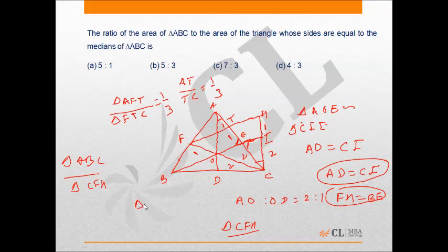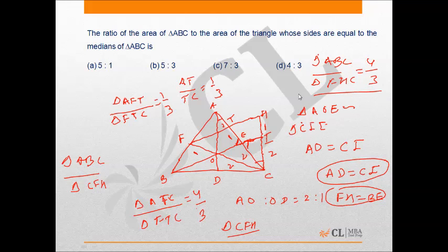Therefore, the ratio of area of triangle AFC to triangle FTC will be 4 is to 3. And this ratio will be exactly the same as the ratio of area of triangle ABC to area of triangle FTC, which is 4 by 3. So the required ratio is 4 is to 3, which is option D.